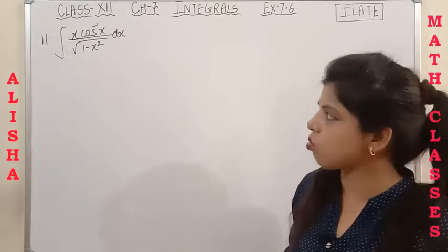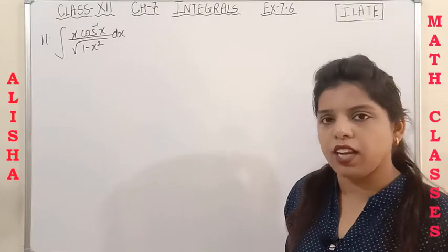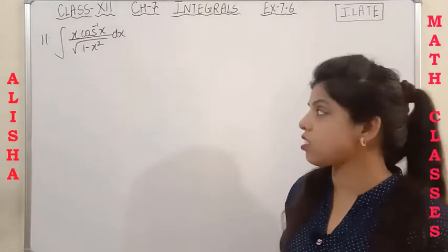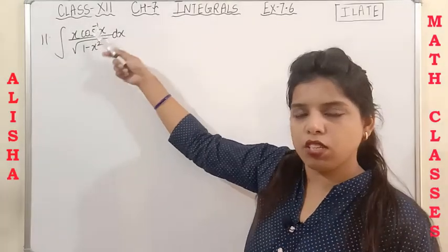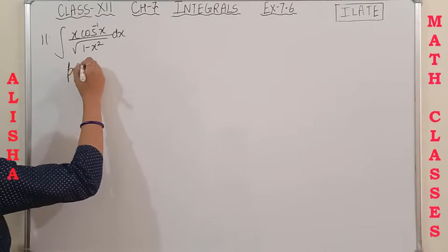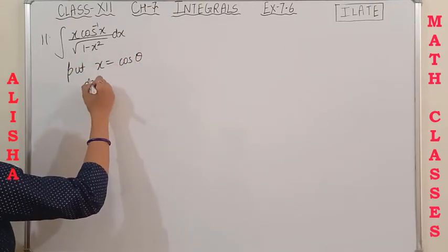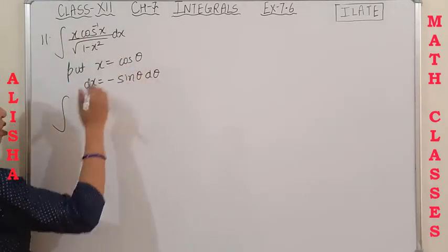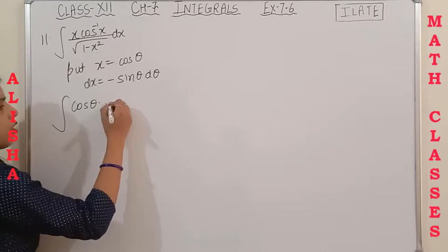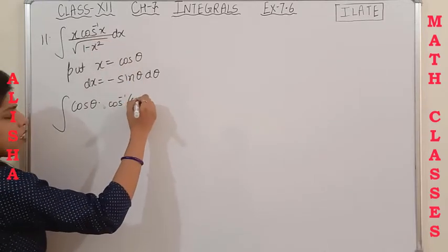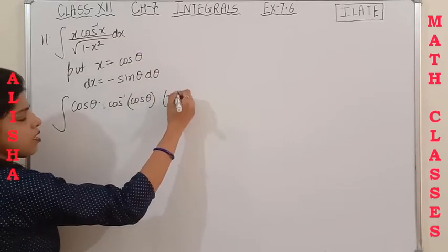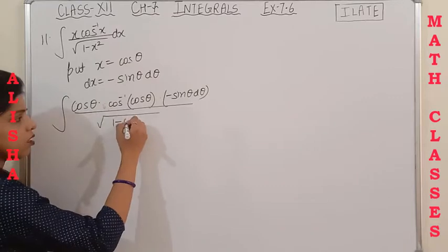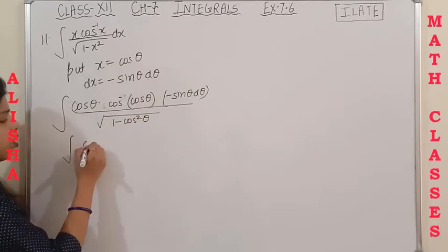Question 11 is the integration of x·cos⁻¹x divided by √(1−x²). As I mentioned for questions 9, 10, and 11, whenever we have an inverse function we can remove it by substitution. To remove cos⁻¹x, put x = cosθ. Differentiating both sides gives dx = −sinθ dθ. Substituting: x becomes cosθ, cos⁻¹x becomes θ, dx becomes −sinθ dθ, and the denominator becomes √(1−cos²θ).